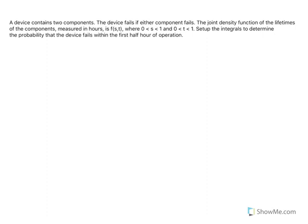There's a device with two components. The device fails if either of the components fails. So if one of them fails, or if both of them fail, then the device doesn't work. The joint density function of the lifetimes of the components, measured in hours, is the function s*t, where s is between 0 and 1, so its lifetime goes up to 1 hour, and the lifetime of the other one, t, goes up to 1 hour as well. Set up the integrals to determine the probability that the device fails within the first half hour.